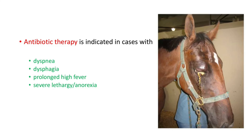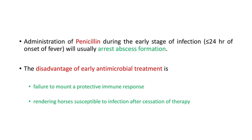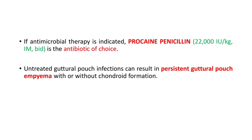Antibiotic therapy is indicated in cases with dyspnea, dysphagia, prolonged high fever, and severe lethargy or anorexia. Administration of penicillin during the early stage of infection — within 24 hours of onset of fever — will usually arrest abscess formation. The disadvantage of early antimicrobial treatment is failure to mount a protective immune response, rendering horses susceptible to reinfection after cessation of therapy.